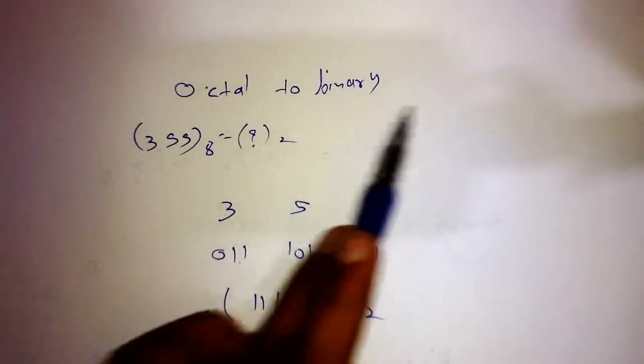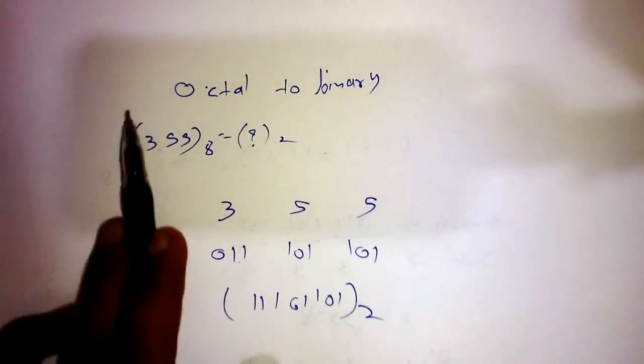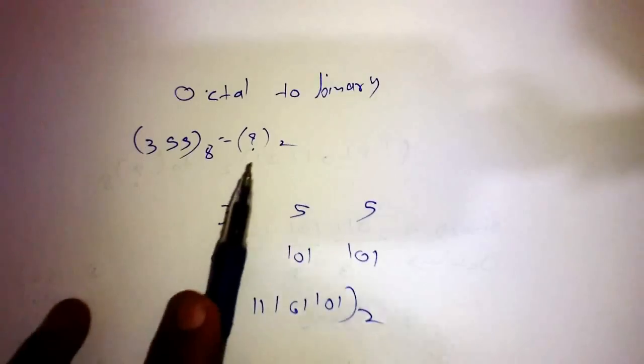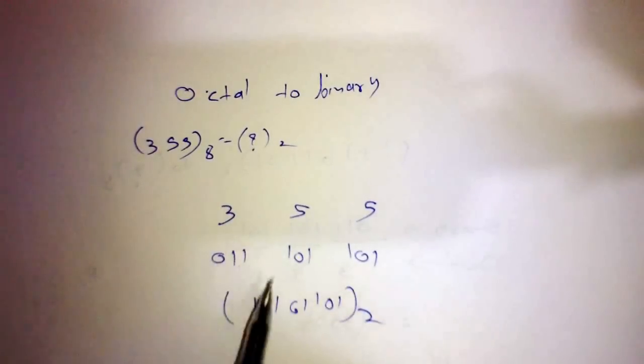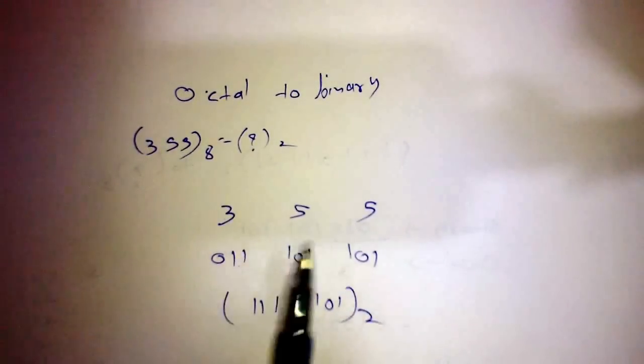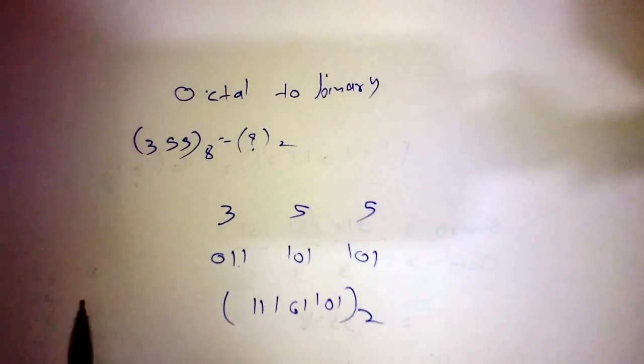So our answer is correct. The octal to binary method is very simple. Just write the octal number and write the equivalent 3-bit binary number for each digit, then combine them.